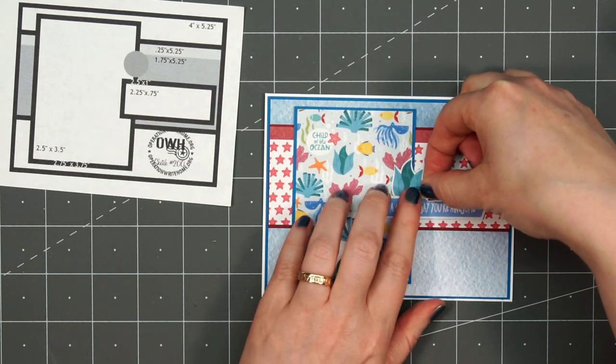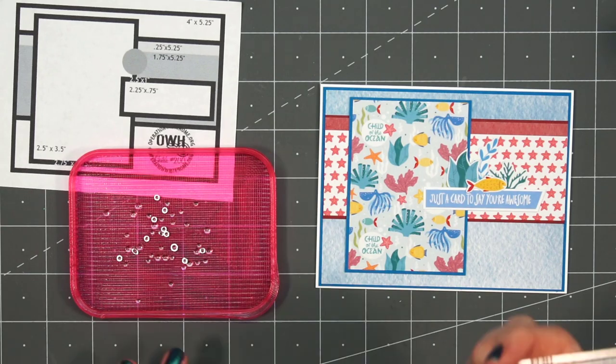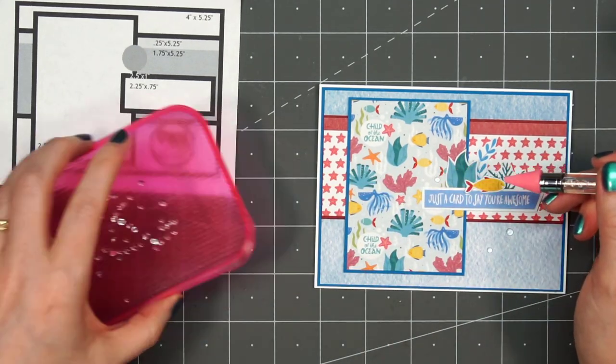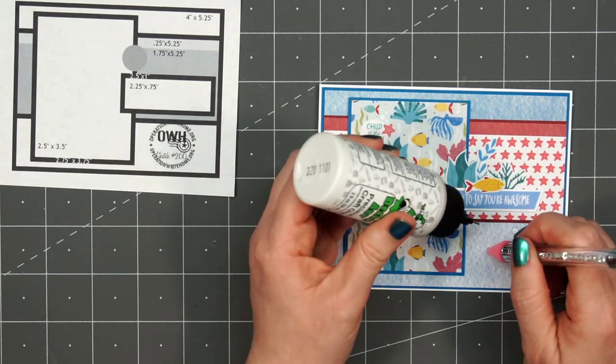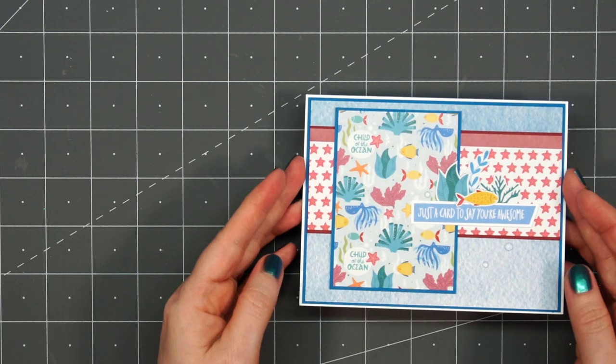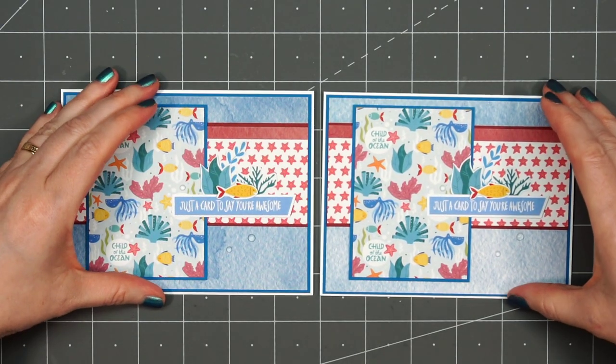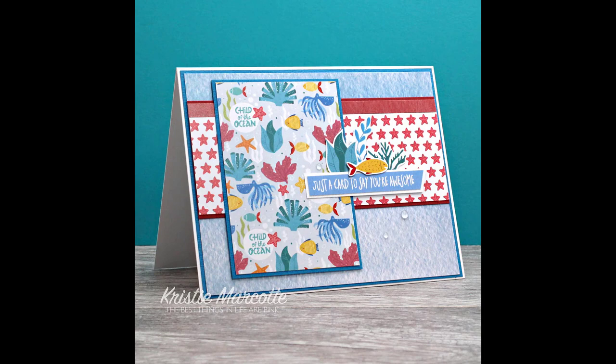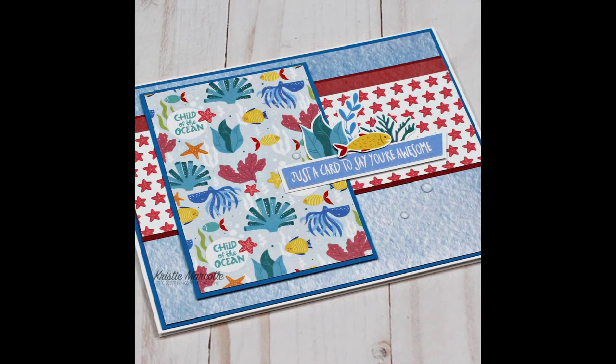Then to finish off the card, I'll bring in some more of the dew drops. I'll put two of them underneath the sentiment toward the right and one above the sentiment on the left. With all of those busy patterns, I didn't think the card needed anything else. So there is my finished card and again I did make two using this sketch. I really like how all three cards turned out, but I think the turtle card is my favorite. Those turtles are adorable.